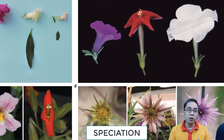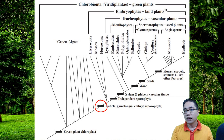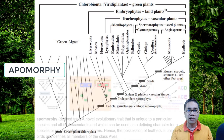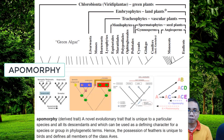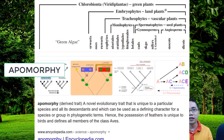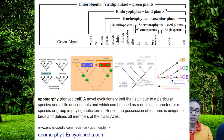Right now, let's focus on the green plants. So, look at these thick short lines here. These are called apomorphies. These are a sort of new evolutionary trait that is unique to a particular species and all its descendants. So, this can therefore be used as a defining character for a species or group in phylogenetic terms.